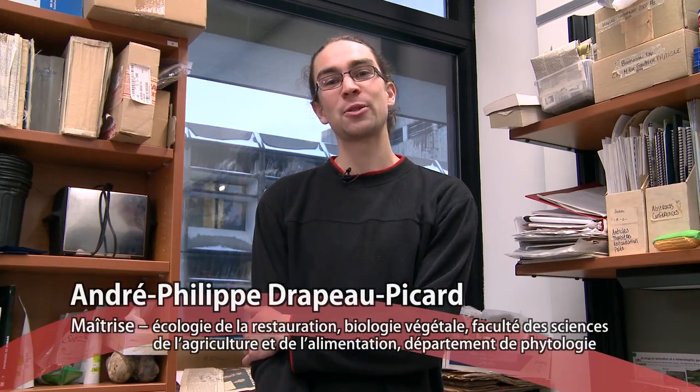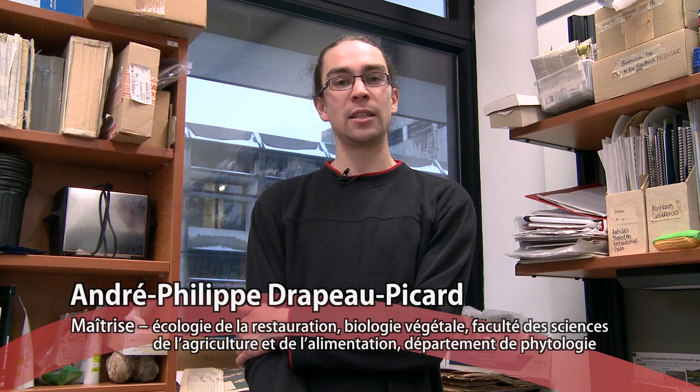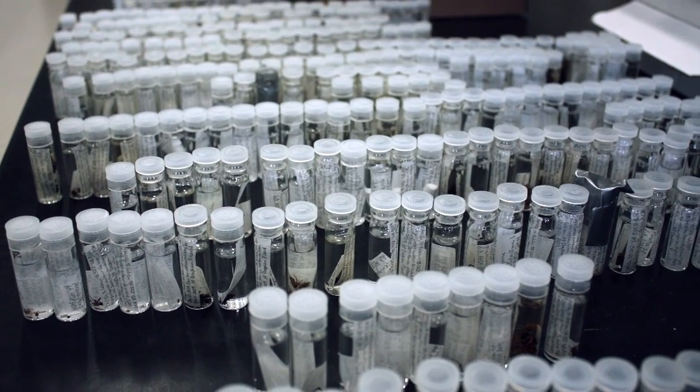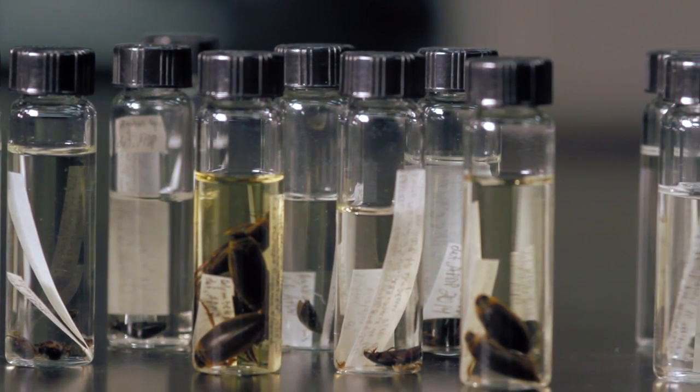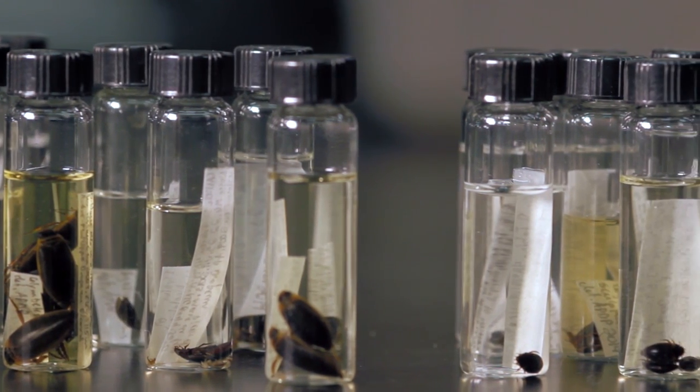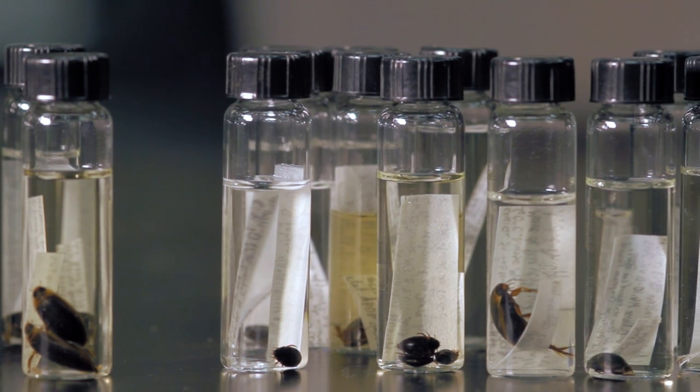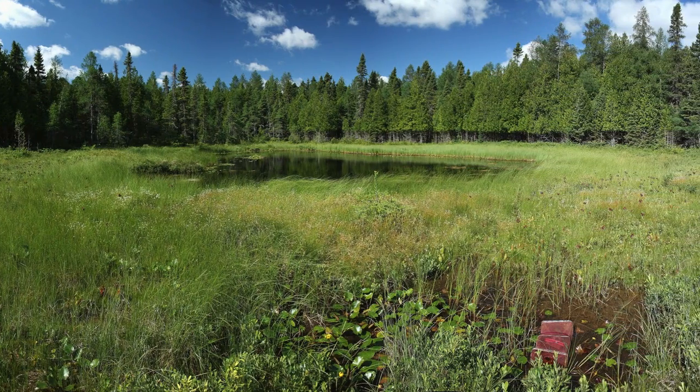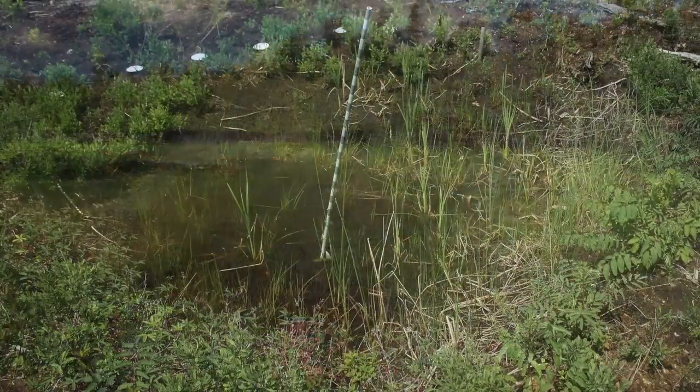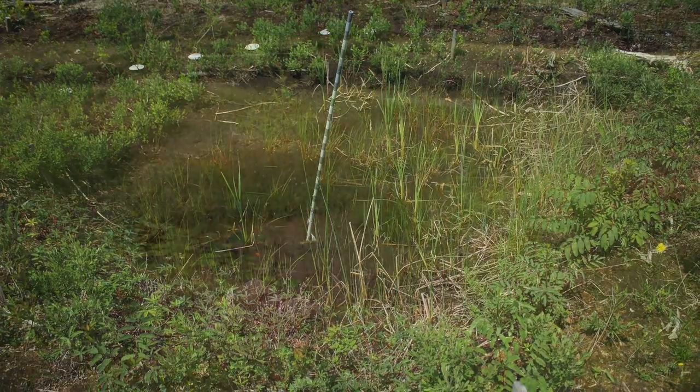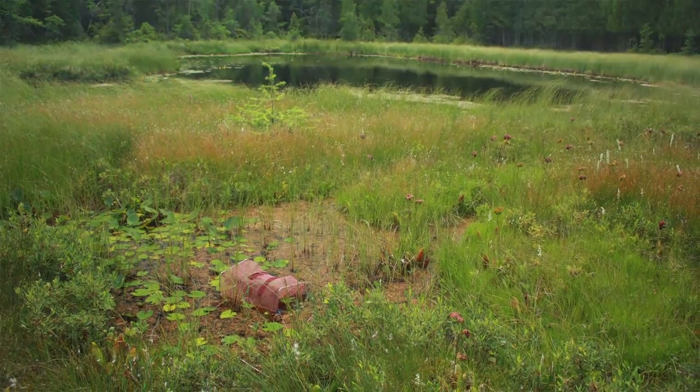Bonjour, je m'appelle André-Philippe Drapeau-Picard. Je suis étudiant à la maîtrise en biologie végétale au département de phytologie de la Faculté des sciences de l'agriculture et de l'alimentation. Je travaille sur l'aménagement des mares dans une tourbière en restauration. J'essaie de voir s'il y a une combinaison de profondeur et de végétation autour de ces mares-là qui favorisent le retour par les araignées d'une part puis les dytiques qui sont des coléoptères aquatiques d'autre part. Qui favorisent le retour d'une diversité de ces animaux-là qu'on retrouve en milieu naturel. J'ai travaillé dans le Bas-Saint-Laurent. On a un site en restauration, une tourbière en restauration près de Rimouski, à Saint-Fabien précisément, juste à côté du Parc du Bic. Pour pouvoir dire que ce que j'observe dans mon site de restauration se rapproche ou pas de ce qu'on retrouve en milieu naturel, je vais comparer notre tourbière en restauration à quatre fennes naturelles qui sont dans la même région que notre site expérimental.